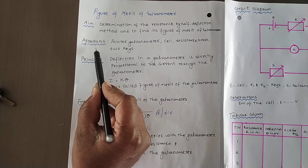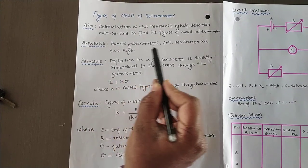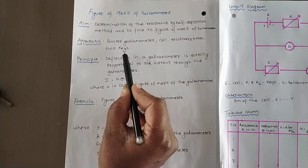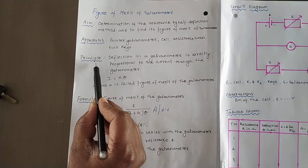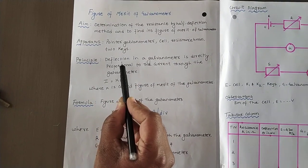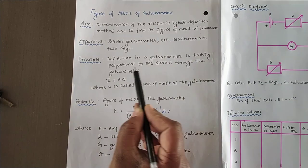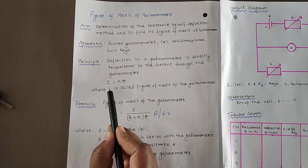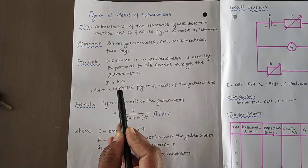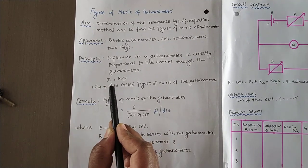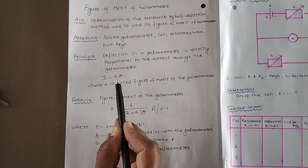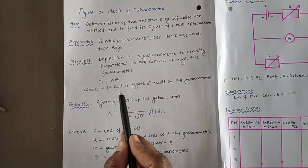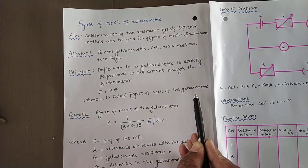The apparatus required here is the pointer galvanometer, cell, resistance boxes, and two plug keys. The principle behind the experiment is: deflection in a galvanometer is directly proportional to current through the galvanometer. Mathematically we write I is equal to K theta. Here I is directly proportional to theta, and if we remove the proportionality constant, we get a constant K, where K is called the figure of merit of the galvanometer.